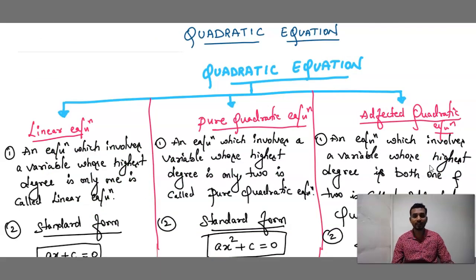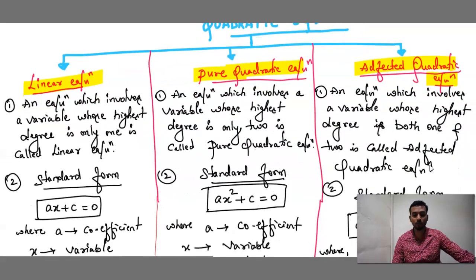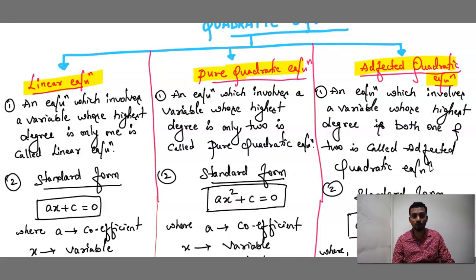Now we are going to start the basics of this chapter, Quadratic Equation. We classify this topic into three ways: one is linear equation, pure quadratic equation, and affected quadratic equation. Linear equation is an equation which involves a variable whose highest degree is 1 — same as linear polynomial. Pure quadratic equation: if the highest degree is only 2, it is called a pure quadratic equation.